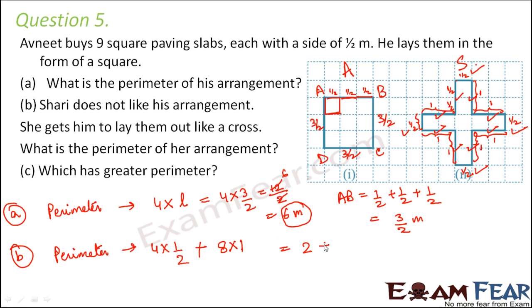So 4 into 1 by 2 would be 2. 8 into 1 would be 8. So 2 plus 8 is 10. So 10 meters would be the perimeter of this cross. So in the third part it asks which has greater perimeter. So of course in the first case it was 6 meters. Now it's 10 meters. So obviously the cross has a greater perimeter.